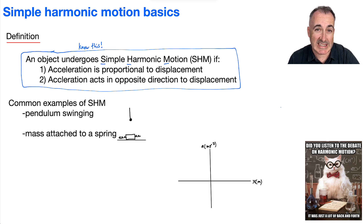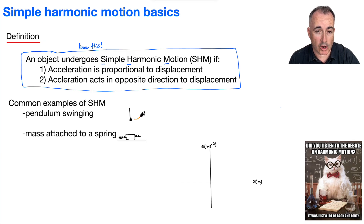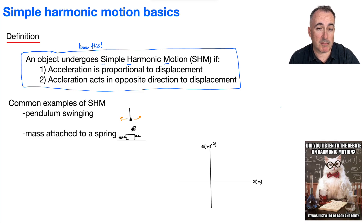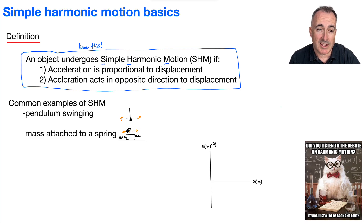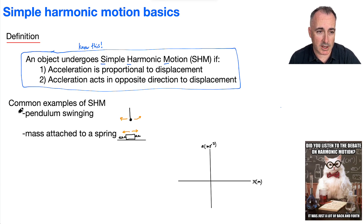Before we go into detail, I just want to discuss what simple harmonic motion actually can be. A common example is a pendulum that's swinging back and forth. It could also be a mass with a spring to the left of it and a spring to the right of it, with the mass on a frictionless surface oscillating back and forth. These are very common examples — a pendulum swinging, a mass attached to a spring.